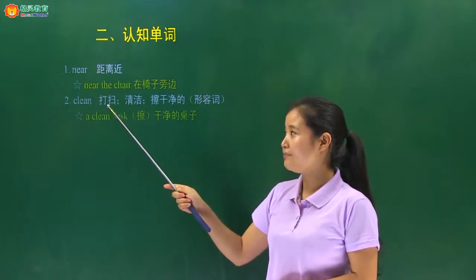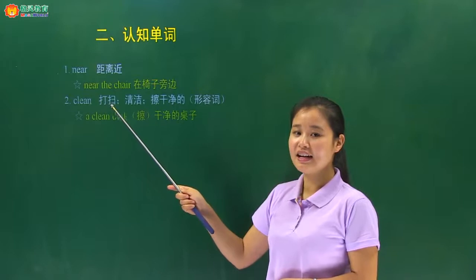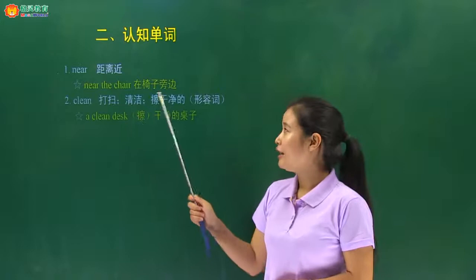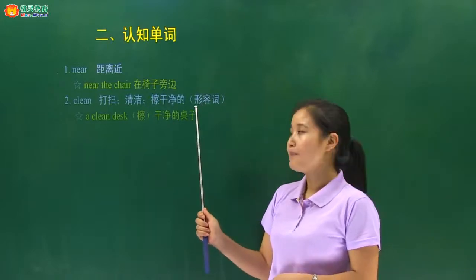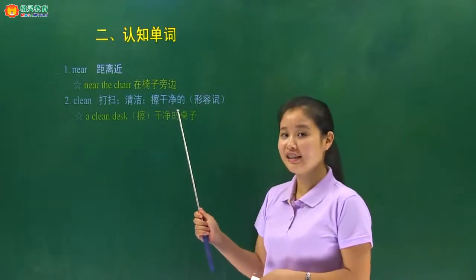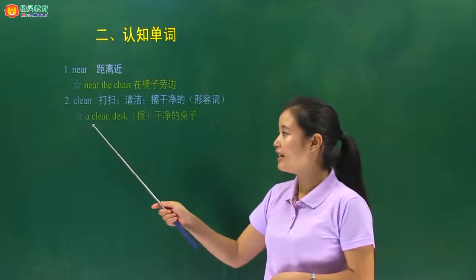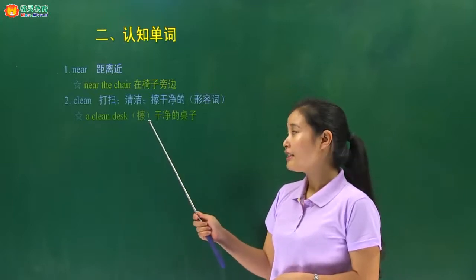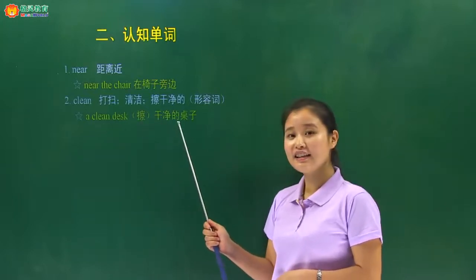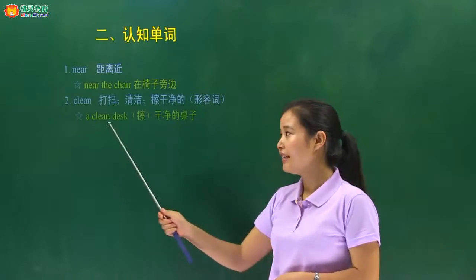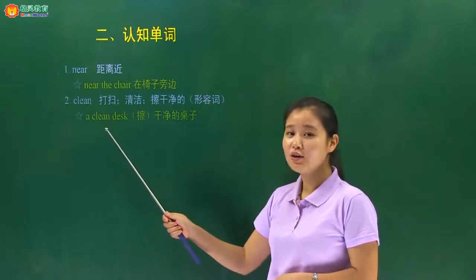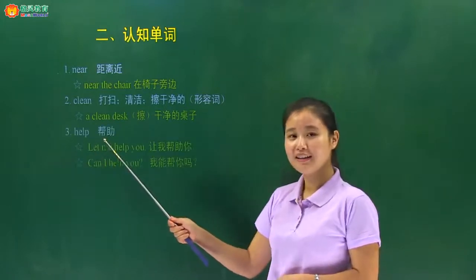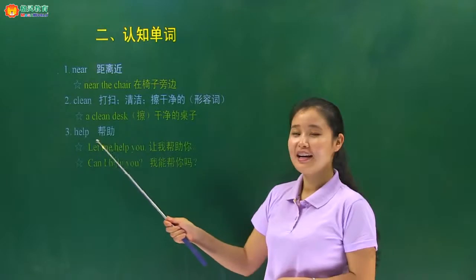The second one，clean. 它的意思是打扫、清洁，做动词；还可以做形容词，表示干净的。例如：a clean desk，意思是擦干净的桌子或干净的桌子。